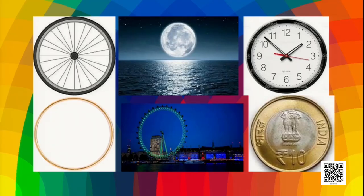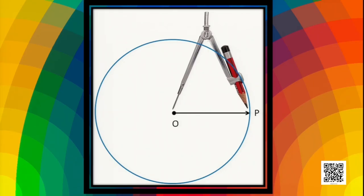Then how do we draw a circle? To draw a circle, we have to use a compass, which generally exists in our geometry box. If we take the compass, we can fix the pencil, and on a plain paper, if we fix the needle of the compass at a point and revolve the pencil around it, we will draw a circle.